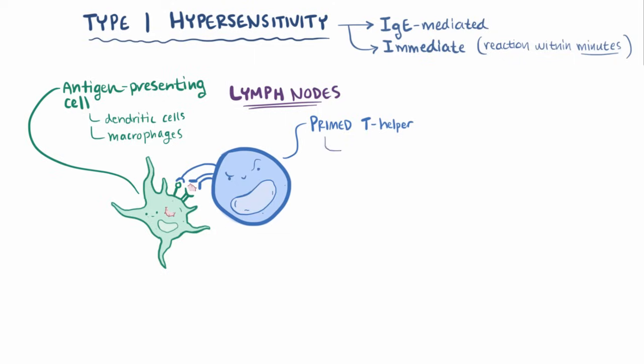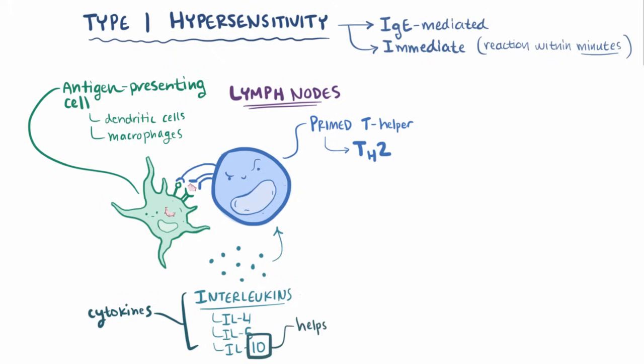Usually in type 1 hypersensitivity, it differentiates into a type 2 T helper cell, or just TH2 cell, and this step happens in response to various small proteins, or interleukins, that might be floating around at the time. Some interleukins that sway the T helper cell into turning into a TH2 cell are interleukin 4, interleukin 5, and interleukin 10, and these are all cytokines, and they're given numbers because it's easier to keep track of them that way.